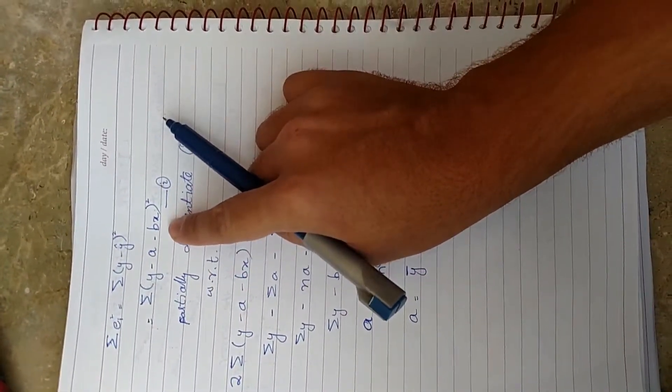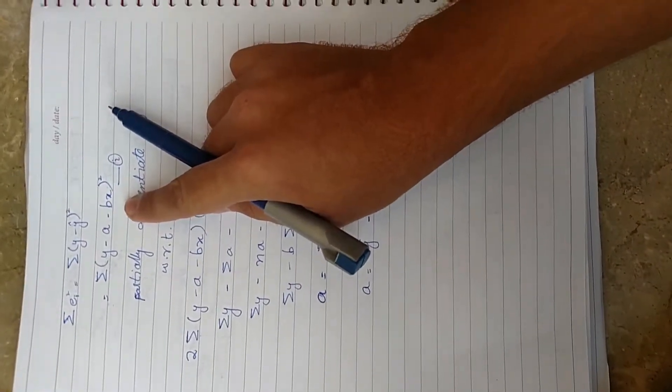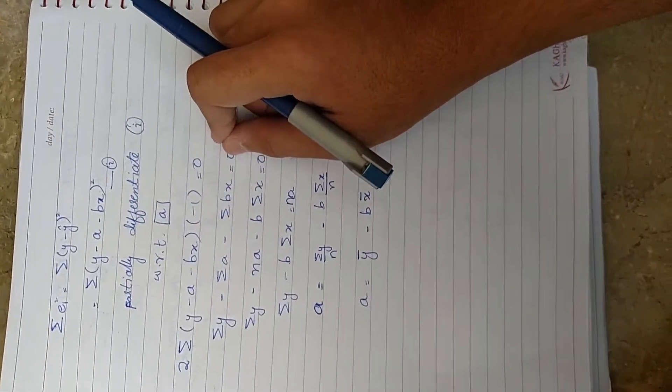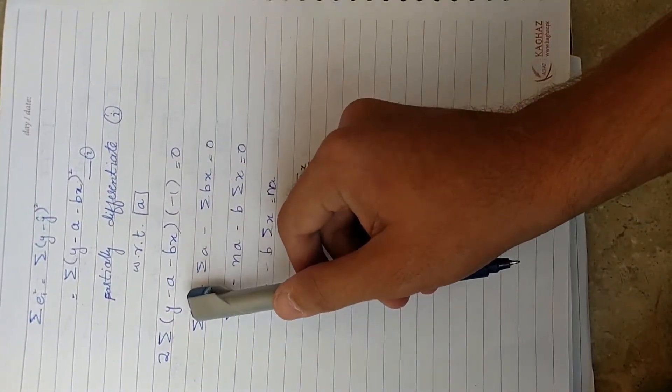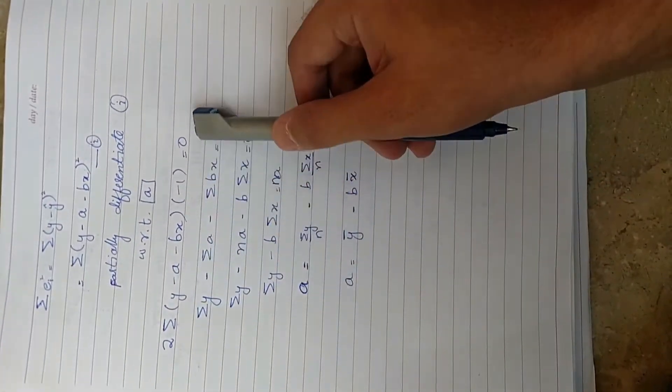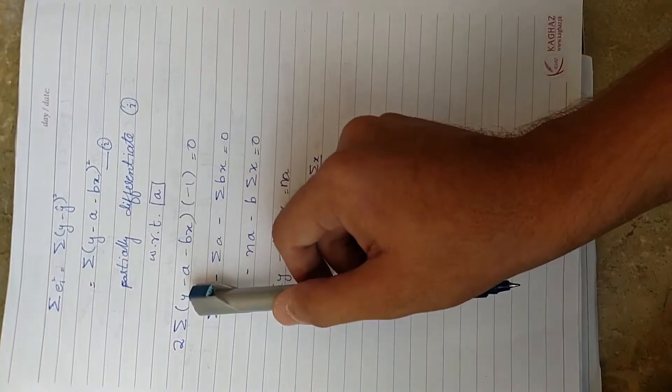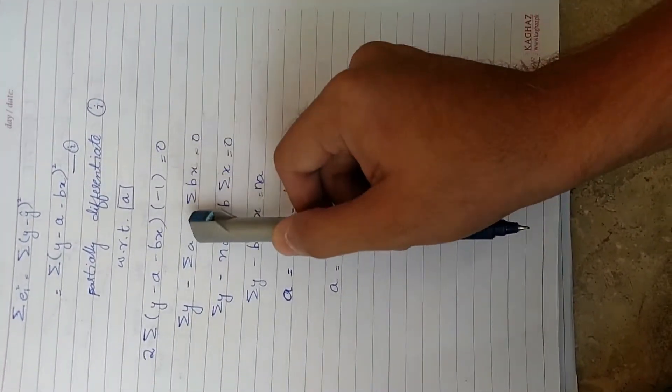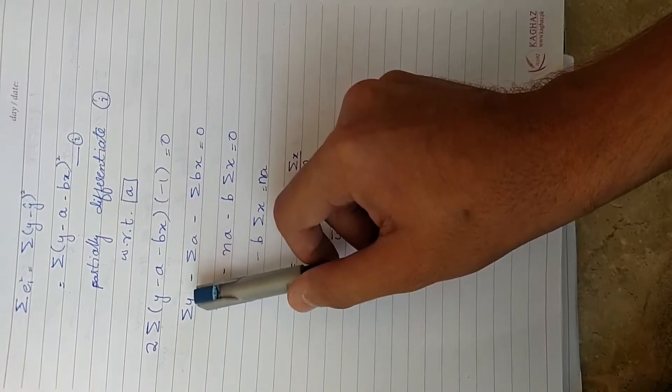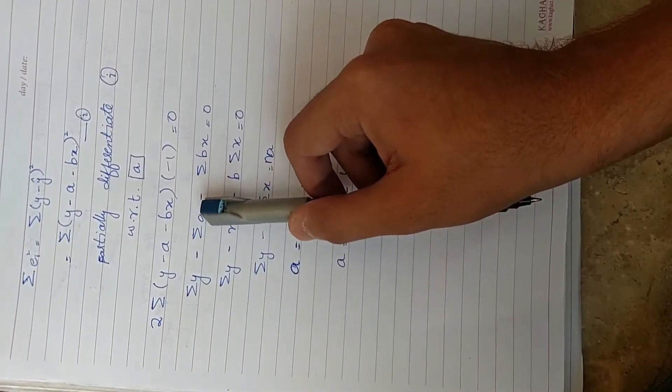Here we partially differentiate it with respect to a. Now divide 2 and minus 1 with 0, so we lose it. After that, there is summation of y, and the summation of any constant number is n times that number.